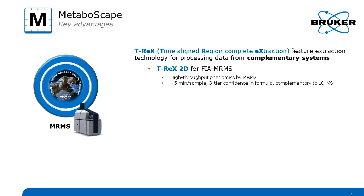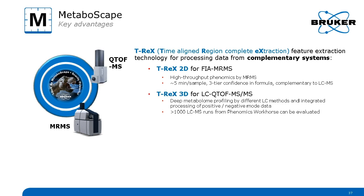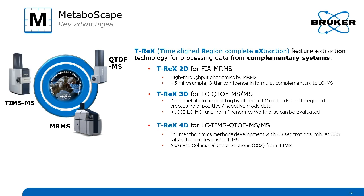The first algorithm is the TREX 2D feature finder for flow injection MRMS analysis, which is for very high throughput phenomic solutions — you can get up to 200 samples per day. The next is the TREX 3D algorithm for LC-QTOF data, which also provides quite high throughput and can easily process more than 1000 LC-MS runs. And if you want to dig really deep into your samples, separate isomers, and use collision cross-sections, we also have a TREX 4D algorithm supporting TIMSTOF technology, where we can separate isomers and calculate CCS values.